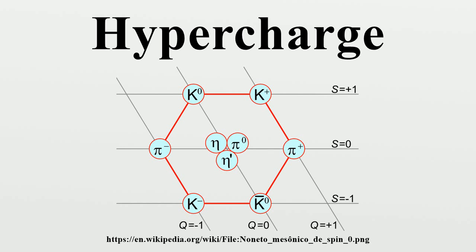Isospin creates multiplets of particles whose average charge is related to the hypercharge, since the hypercharge is the same for all members of a multiplet, and the average of the I3 values is zero.